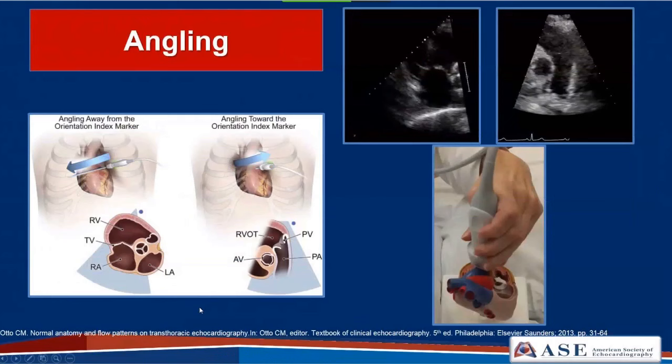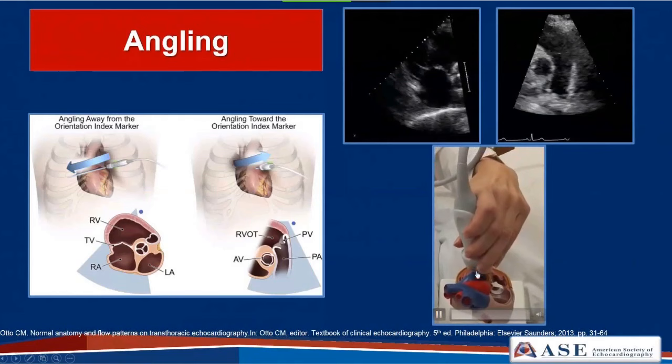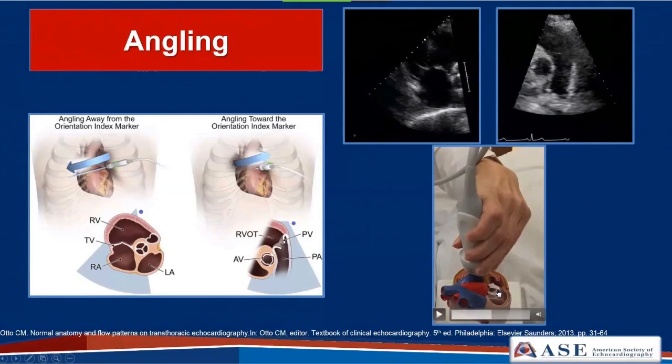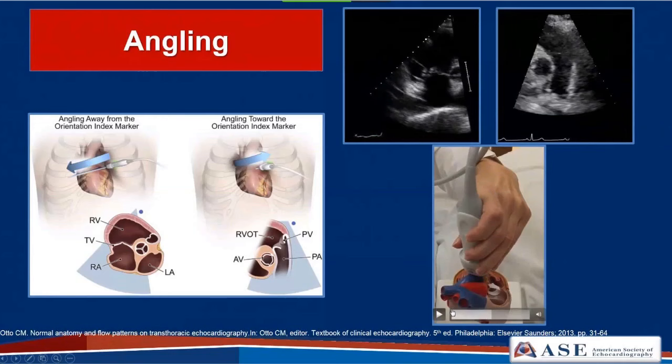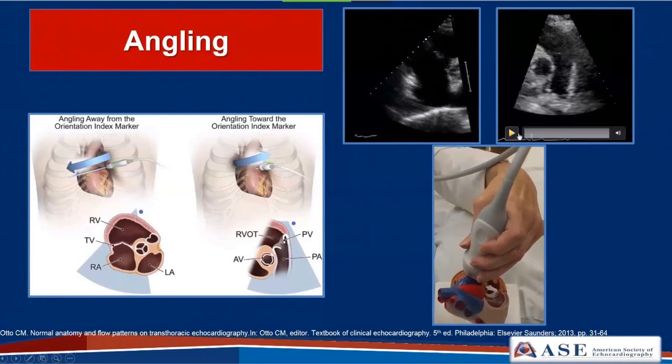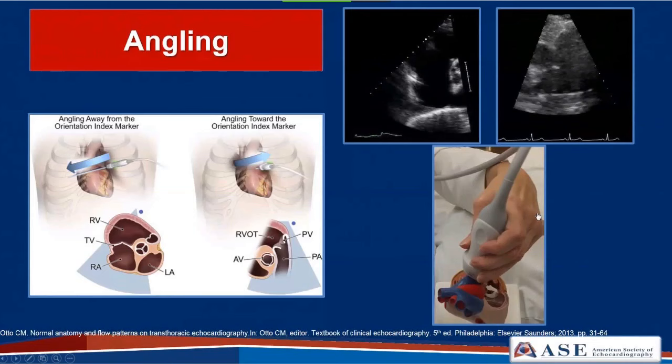Next we'll talk about angling—a small maneuver used to direct the sound beam towards a structure of interest rather than centering it. In this example, we angle rightward on the heart to demonstrate and focus in on the tricuspid valve, where we see the right atrium and tricuspid valve. Angling more leftward, we can focus in on the pulmonic valve, seeing the RVOT, the pulmonic valve, and the main pulmonary artery.